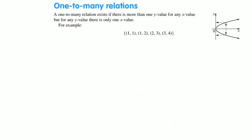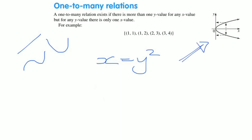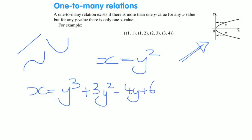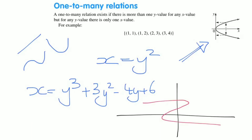Most graphs seen so far in mathematics, whether linear, parabolas, cubics, and so on, are not one-to-many. One-to-many relationships generally involve relations that reverse the order of x and y. For example, x equals y squared, or a cubic such as x equals y cubed plus 3y squared minus 4y plus 6. In that cubic graph, a single x value can in fact give us one, two, or three y values, making it a one-to-many.